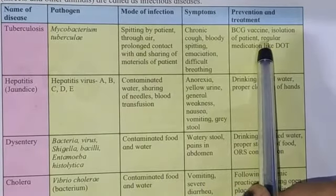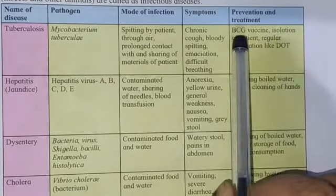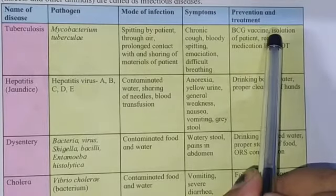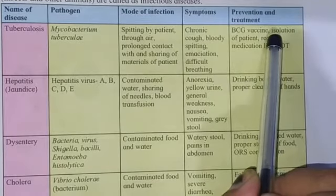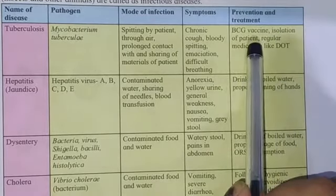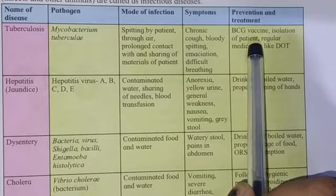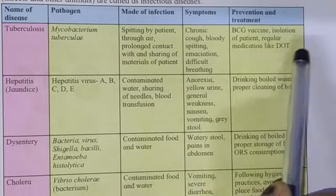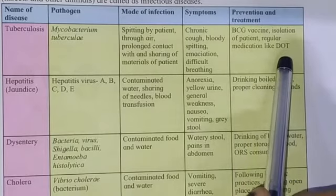How to prevent tuberculosis? BCG vaccine — this is given to each newborn child so that the person may not get tuberculosis in the future. Isolation of the patient — that person should be kept in a separate room so that the bacterium does not enter another person's body. Regular medication like DOT — this is the treatment given to the patient.